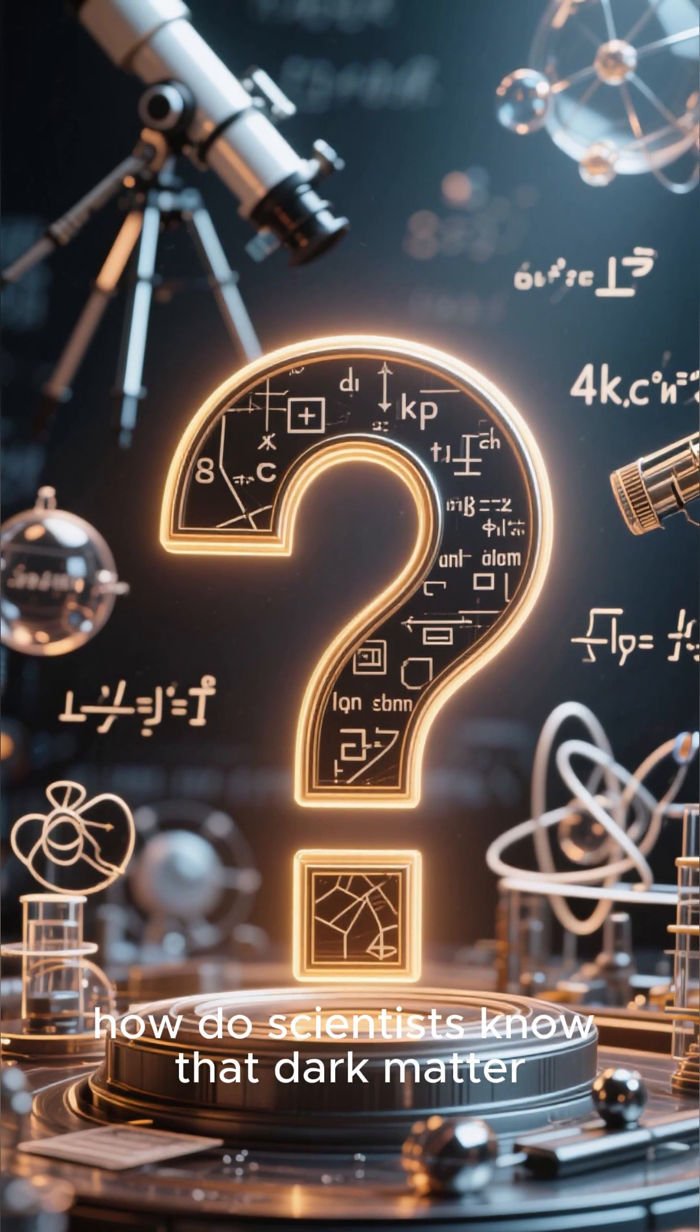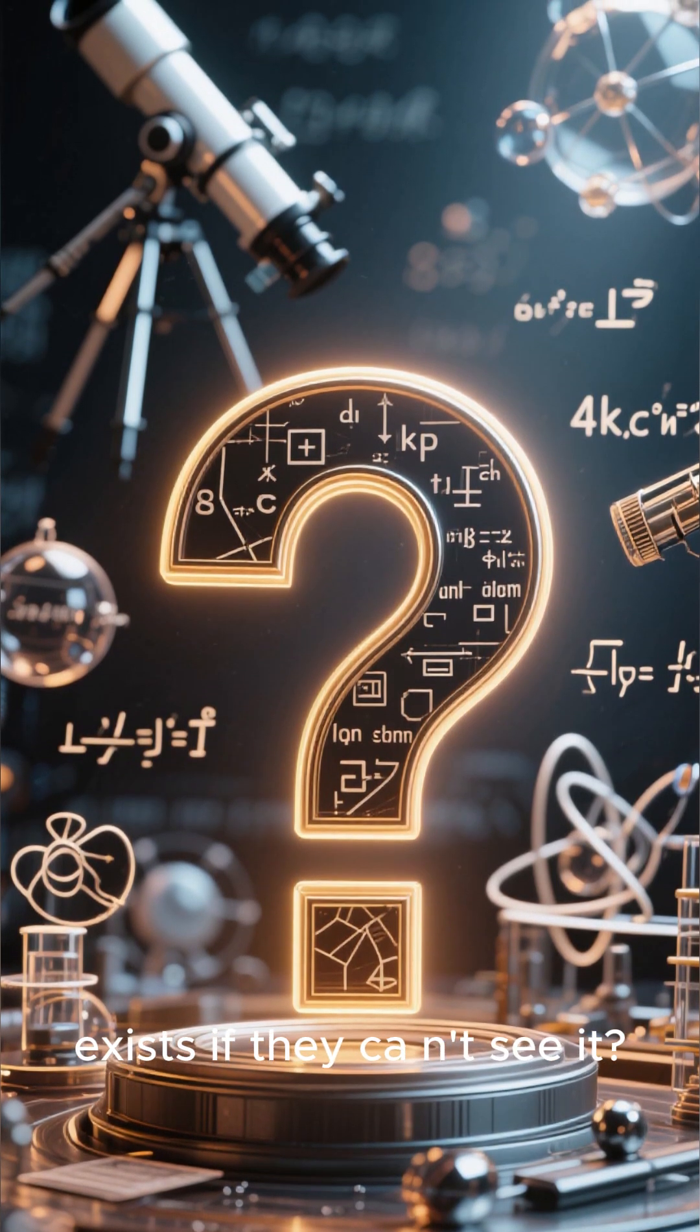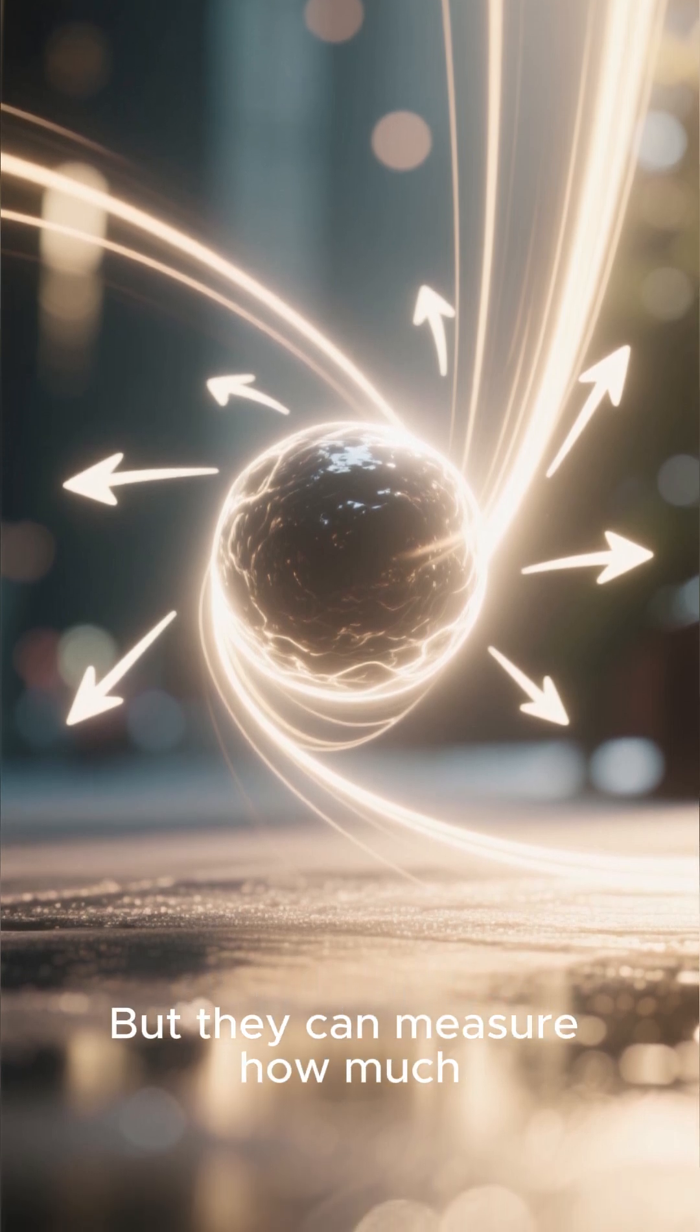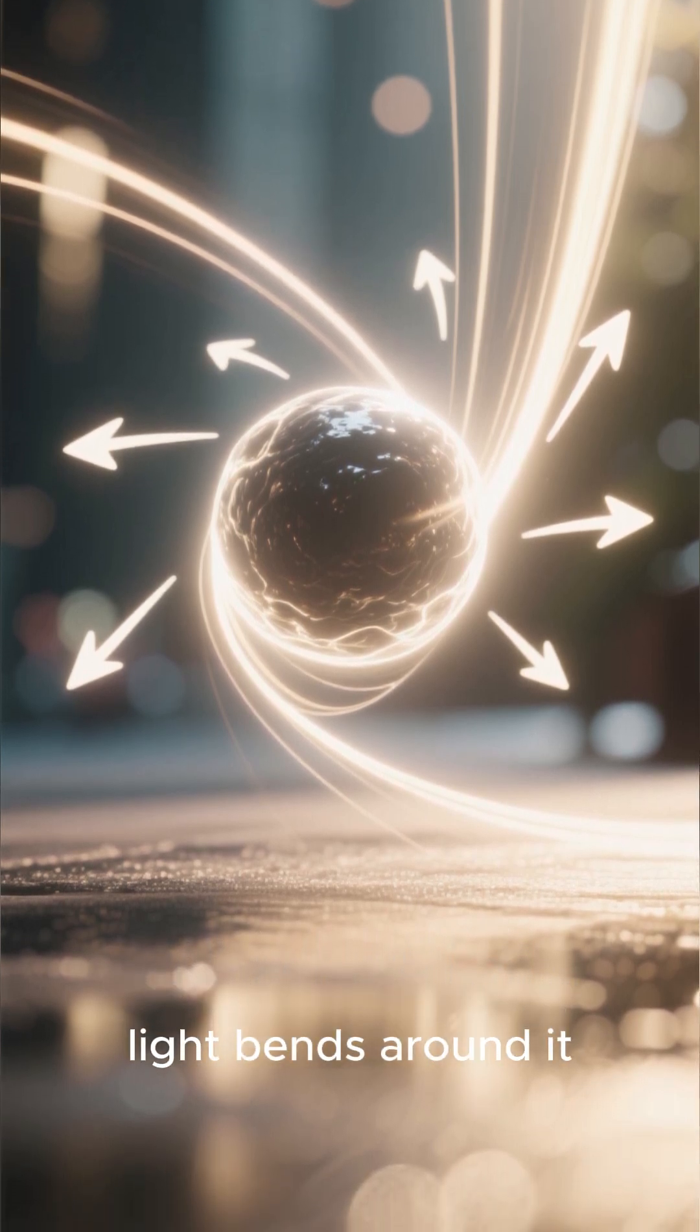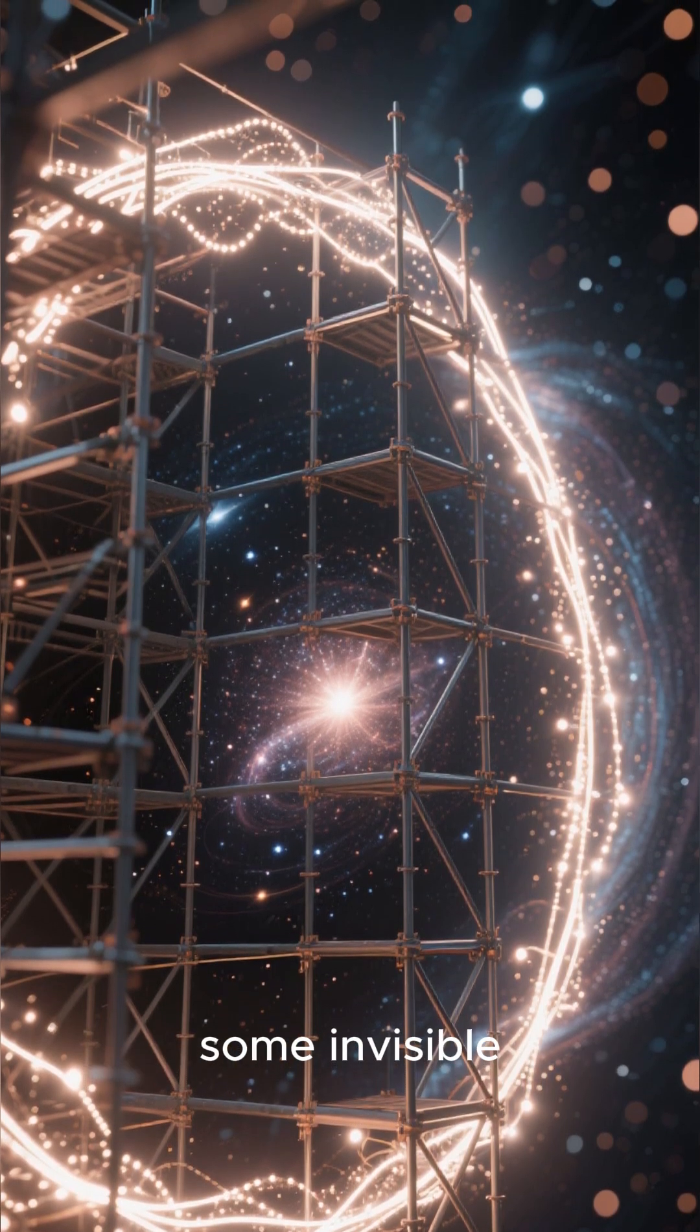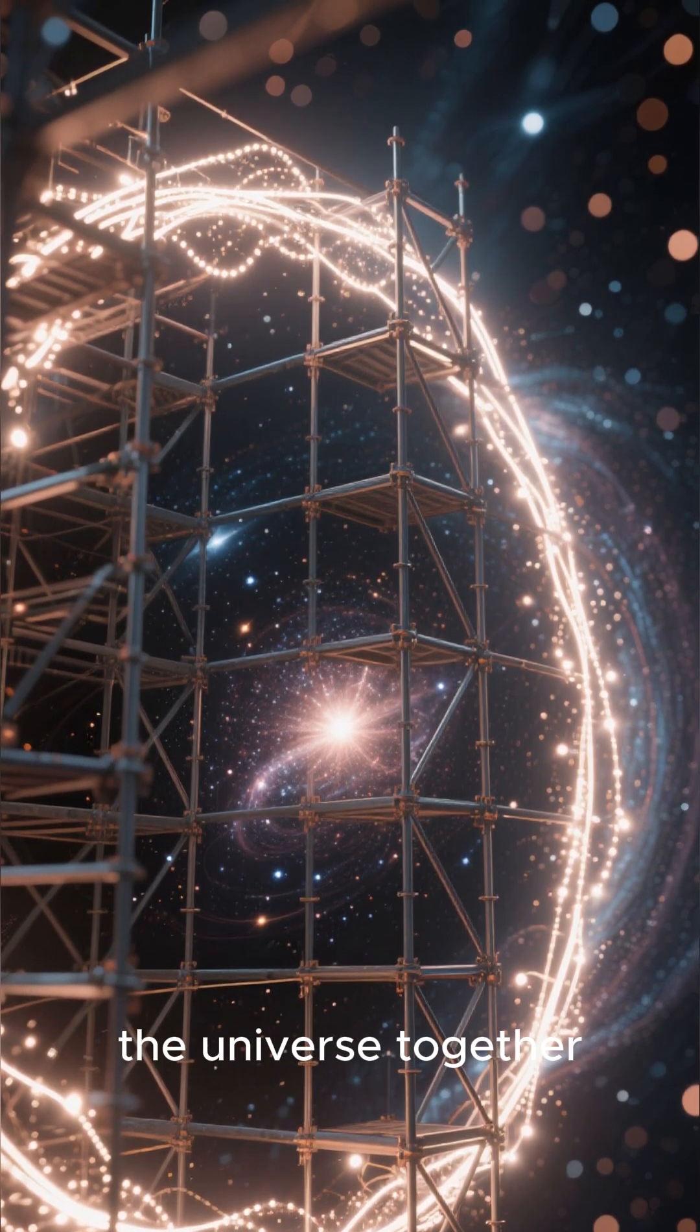How do scientists know that dark matter exists if they can see it? Well, they can't see it because it's transparent. But they can measure how much light bends around it. And that bending of light tells us that there is some mass there, some invisible scaffolding that holds the universe together.